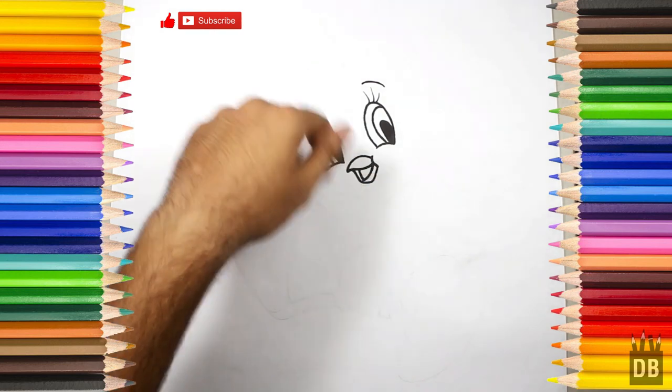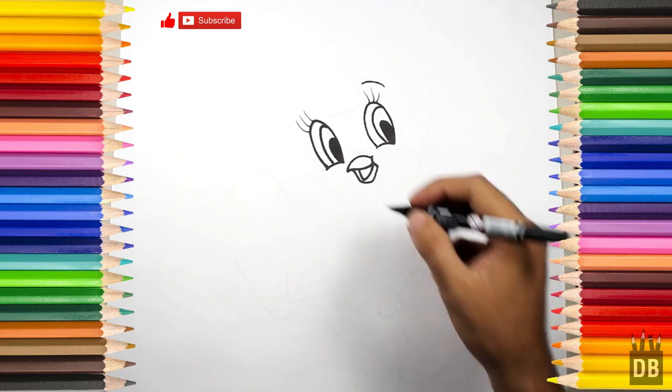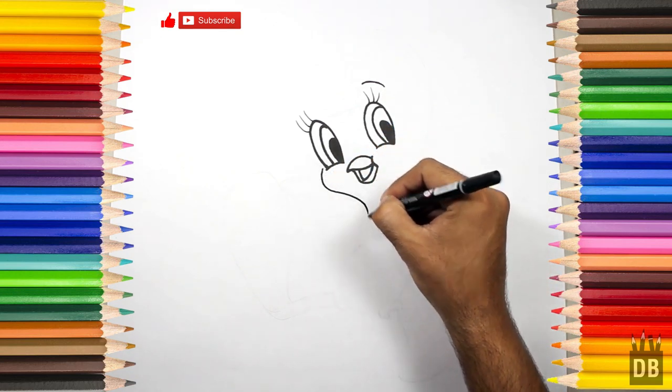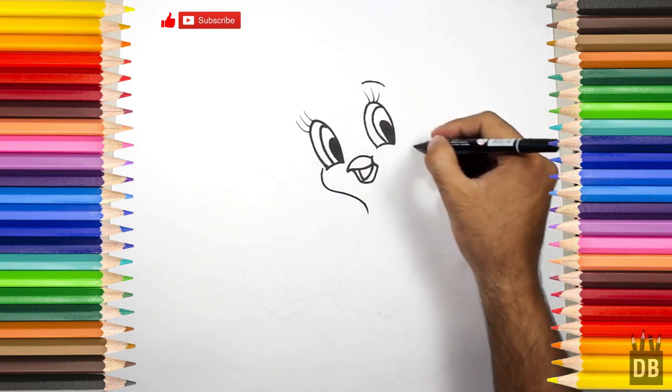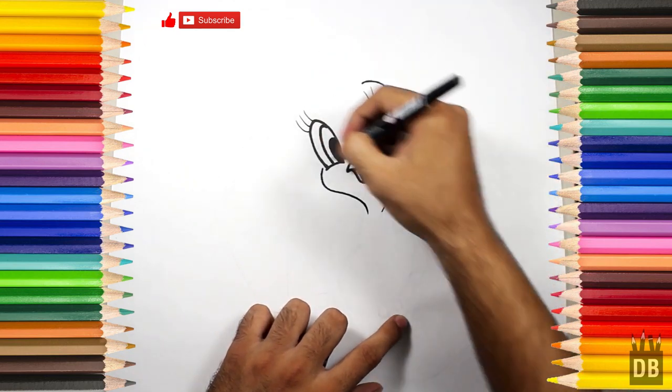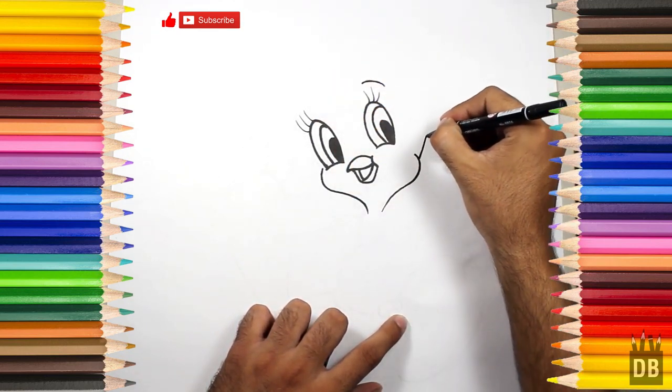As you can see, the inner structure of the face is ready. Now we are going to make the outer structure. For that we will make a line like this and from here. The head is like a balloon shape and a big curve.